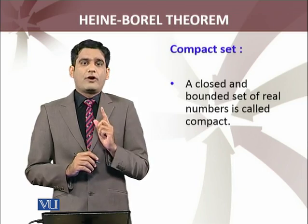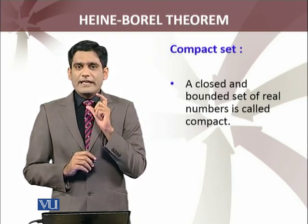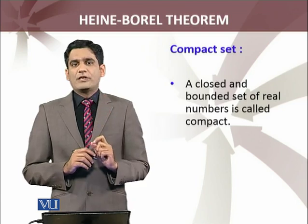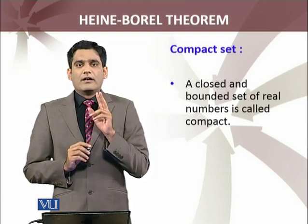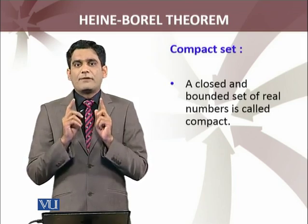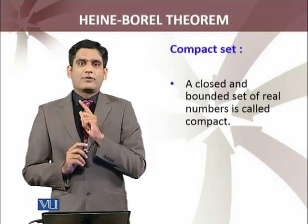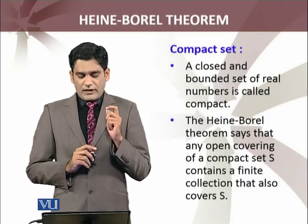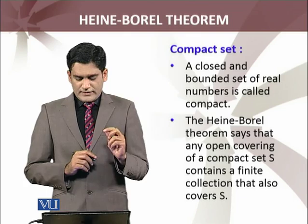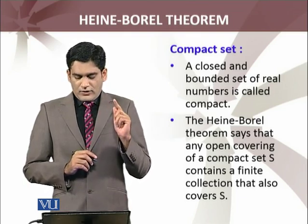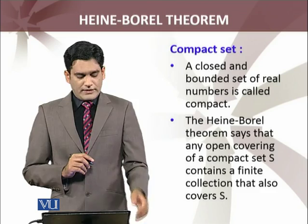Now, in this theorem, we have a closed and bounded set of real numbers. Closed and bounded sets of real numbers have a special name — these sets are known as compact sets. For example, the closed interval [0,1] is bounded and closed, so the closed interval [0,1] is a compact subset of the set of real numbers. Any closed and bounded subset of real numbers will be a compact set by that definition. So this theorem states that any open cover of a compact set S contains a finite sub cover.